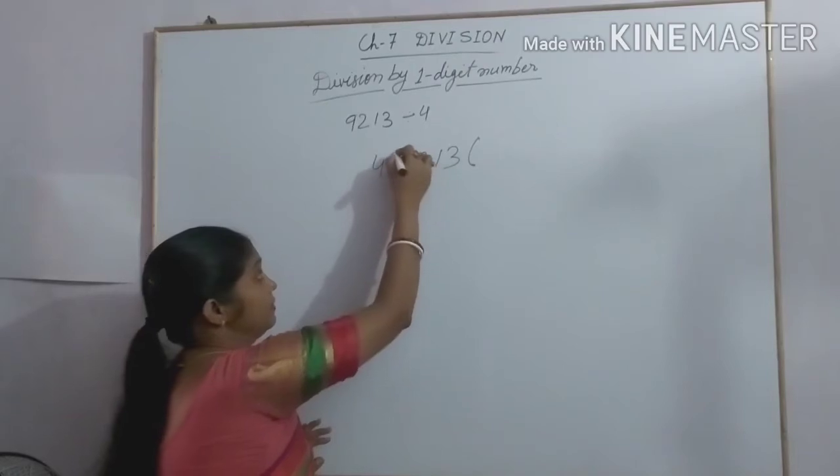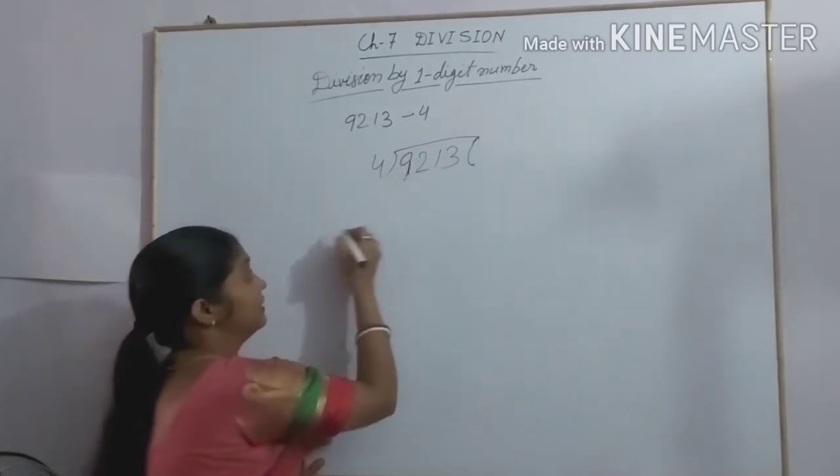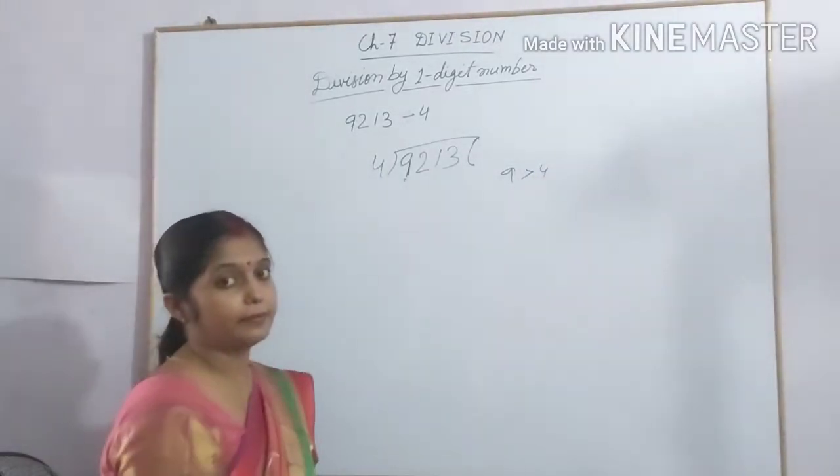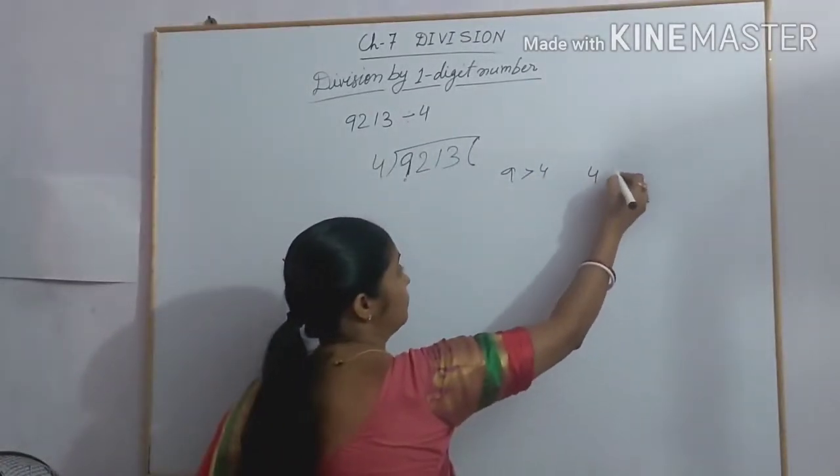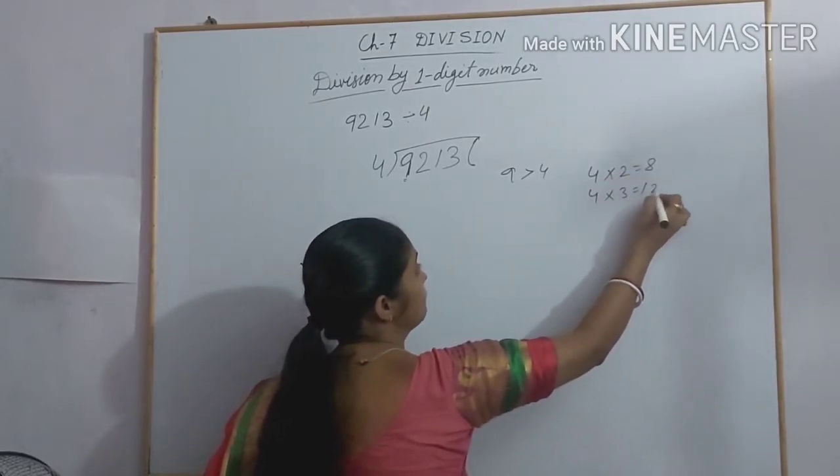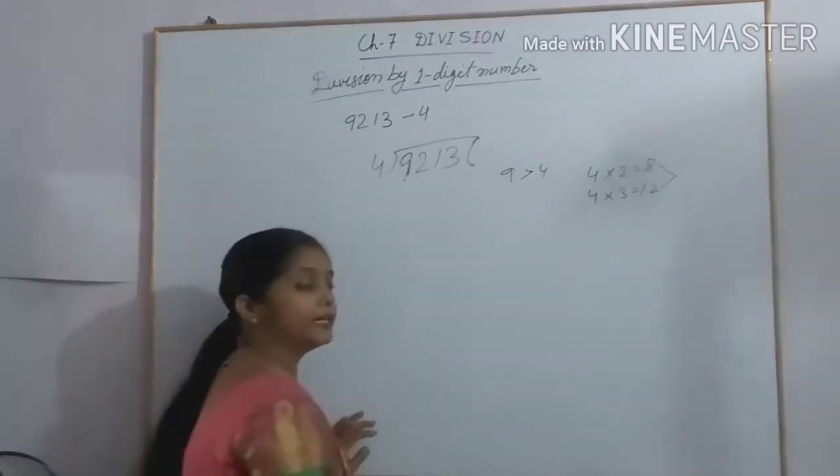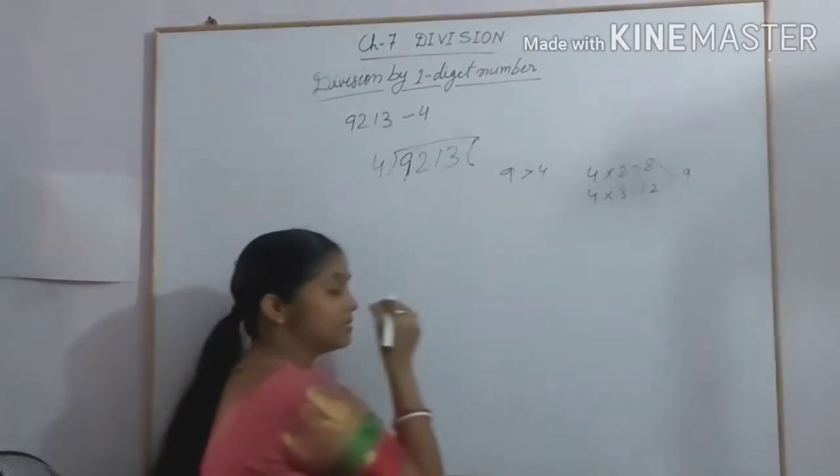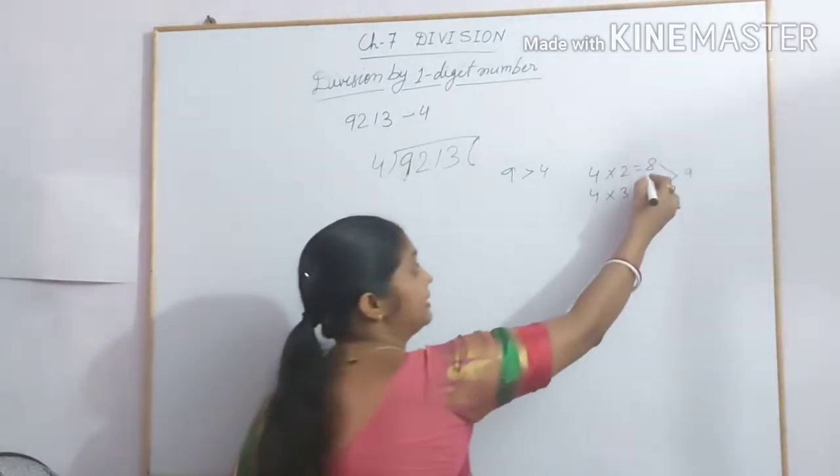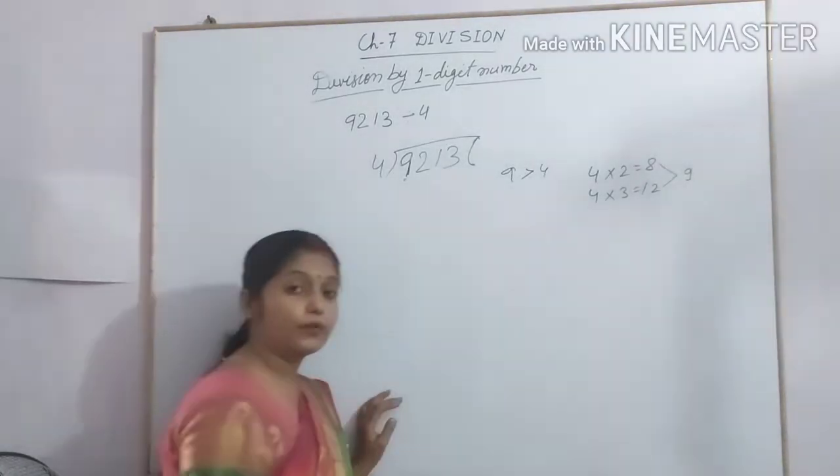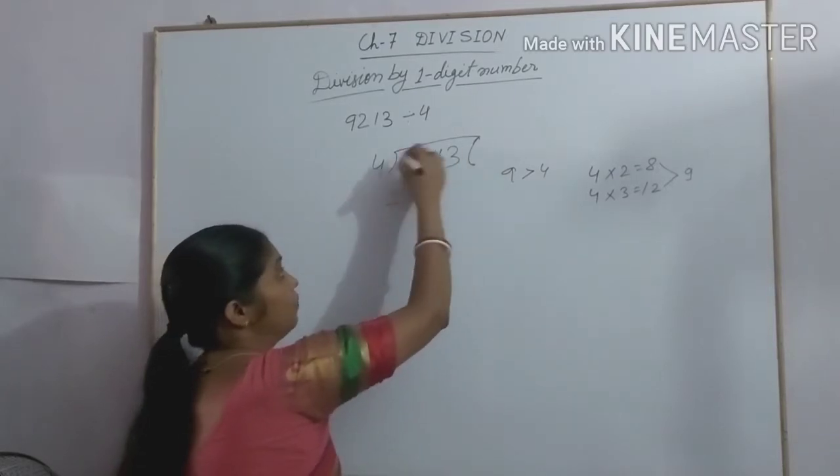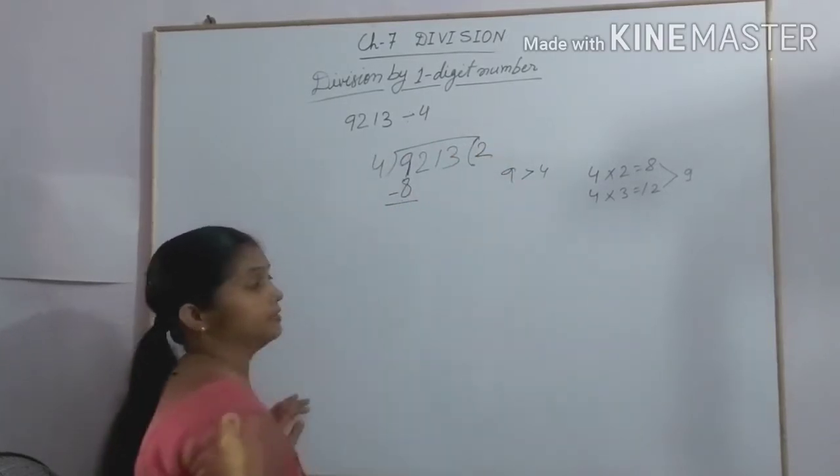Look at the first digit. The first digit is 9. Here 9 is greater than 4, so we can divide 9 by 4. Now look at the table of 4. 4 times 2 gives you 8 and 4 times 3 gives you 12. 9 lies between 8 and 12. So we write the equal number or less number, that means smaller number. Here 8 is smaller than 9, so we can write here 8. 4 times 2 is 8.